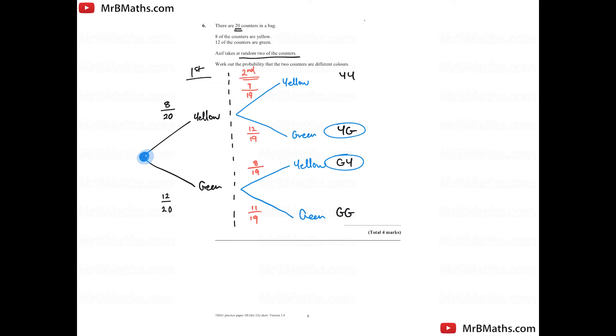Probability trees you need to remember that going across is times, going down is add. Now if you think about this from a fraction point of view, if you times fractions together, the value will get smaller. So therefore choosing things in a certain row, less chance of it happening. So that's why as you go across, you times.